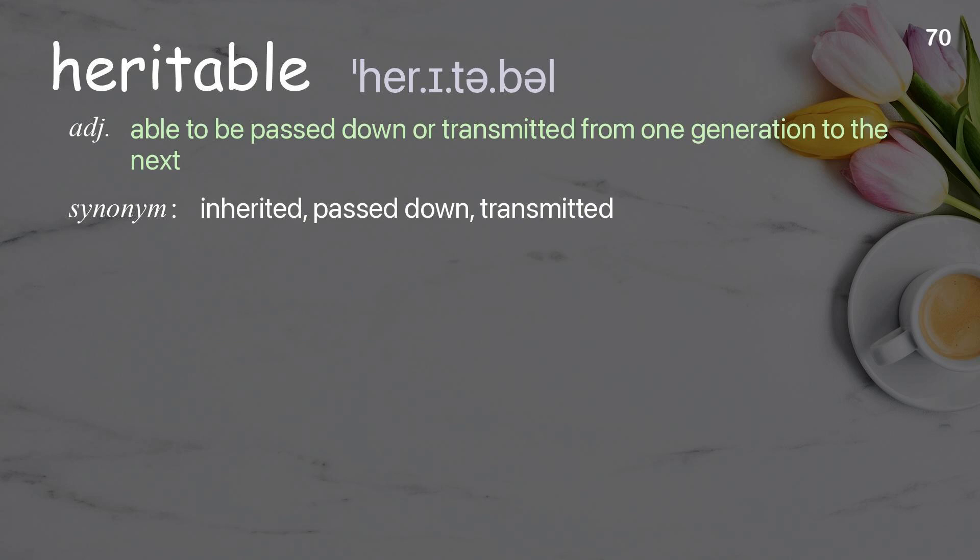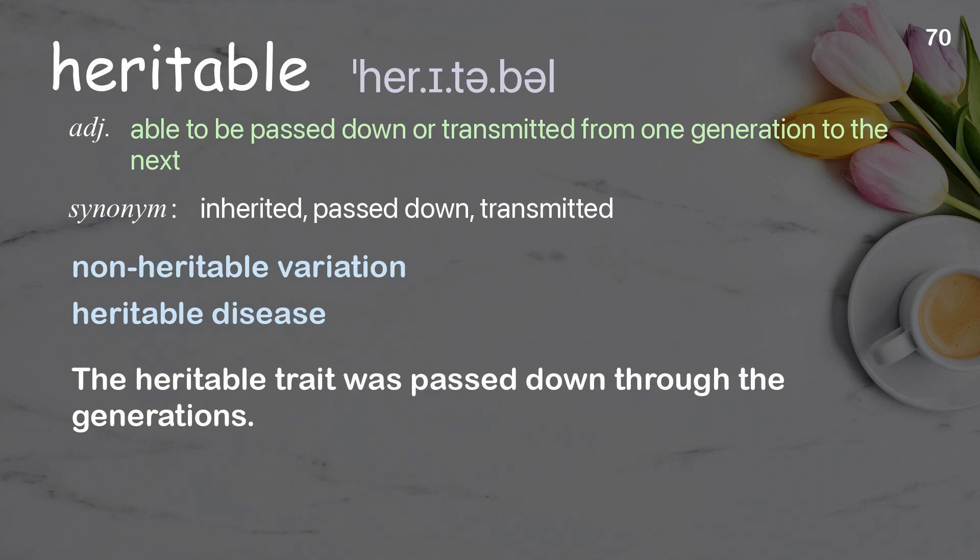Heritable: able to be passed down or transmitted from one generation to the next. Examples: non-heritable variation, heritable disease. The heritable trait was passed down through the generations.